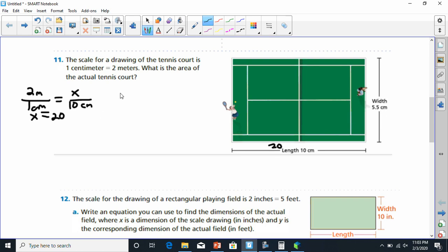Next, it says the width is 5.5. So if we take that same 2 meters over 1 centimeter, this time we put it to x over 5.5, we know that we've got x equals 2 times 5.5 is 11. So now we've got 20 times 11. 20 times 11, 20 and then 20 again. That's going to give us 220.